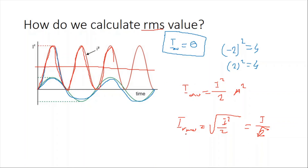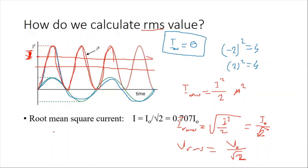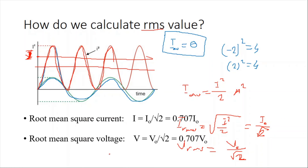Similarly, V_RMS = V₀/√2. So I_RMS ≈ 0.707 I₀, where I₀ is the peak current, and V_RMS ≈ 0.707 V₀, where V₀ is the peak voltage. The RMS value lies between the average value and the maximum value, and it is closer to the peak value.